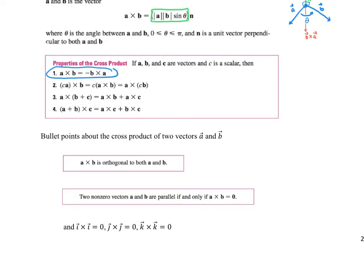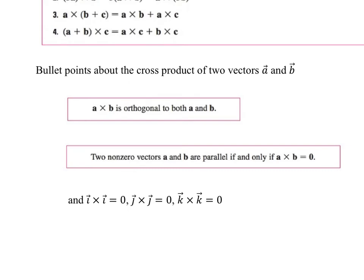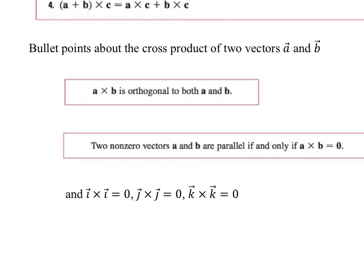When you take A cross B, the result is orthogonal or perpendicular to both A and B, and that's really important as we continue to study this. Two non-zero vectors A and B are parallel if and only if the cross product equals the zero vector. For that reason — and this is a typing error in the notes, so please fix it — if we take our unit vectors I, J, and K and cross them with themselves, I cross I is the zero vector, J cross J is the zero vector, and K cross K is the zero vector, because they're parallel to themselves.